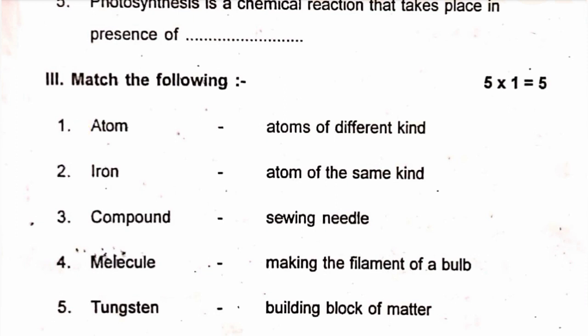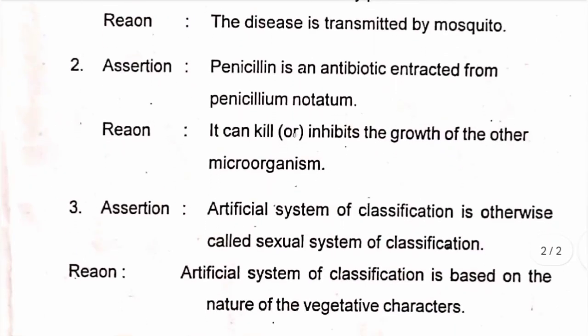Roman number 4: assertion and reason. First: Assertion: malaria is caused by protozoa. Reason: the disease is transmitted by mosquito. Second: Assertion: penicillin is an antibiotic that is extracted from penicillium notatum. Reason: it can kill or inhibit the growth of other microorganisms. Third: Assertion: artificial system of classification is otherwise called sexual system of classification. Reason: artificial system of classification is based on the nature of the vegetative characters.